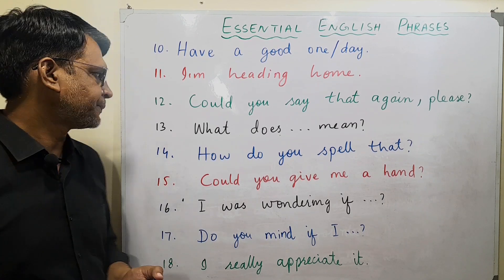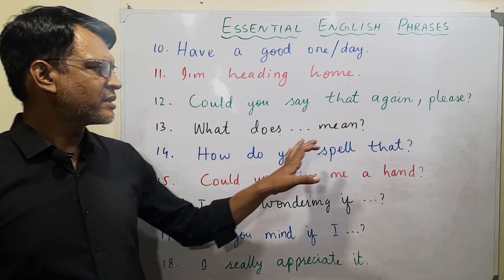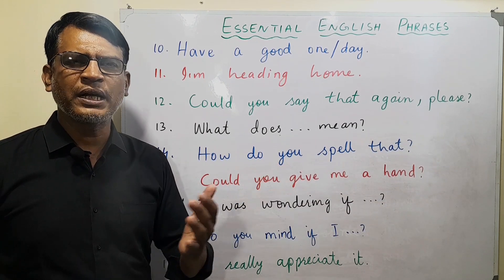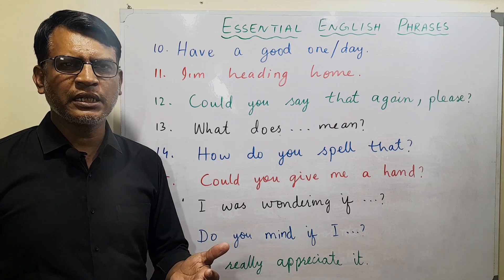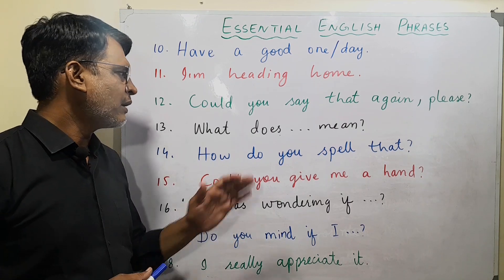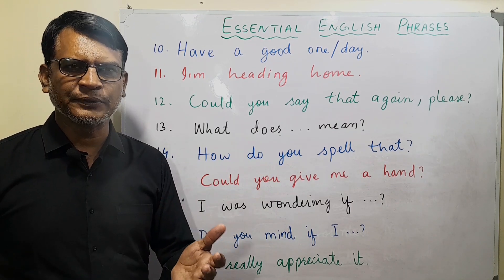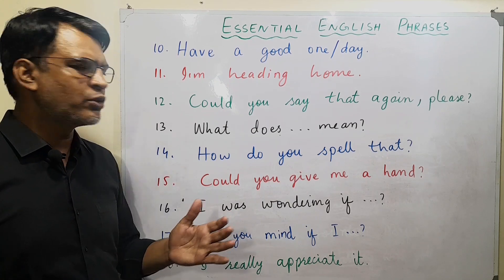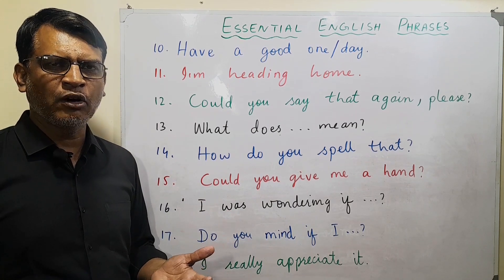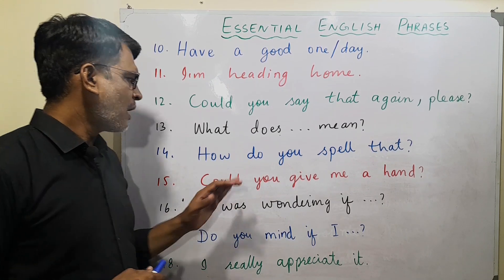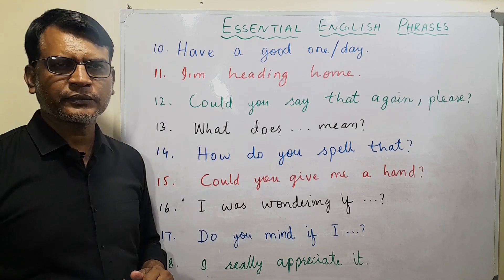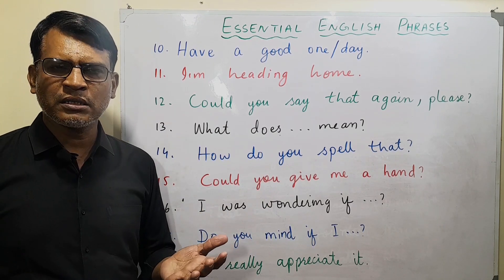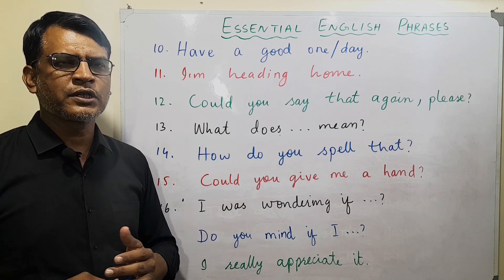'What does ___ mean?' — for example, 'What does stupendous mean?' or 'What does archaic mean?' or 'What does accurate mean?' You are asking the meaning of a word. Then 'How do you spell that?' — somebody said something and then you ask for the spelling.